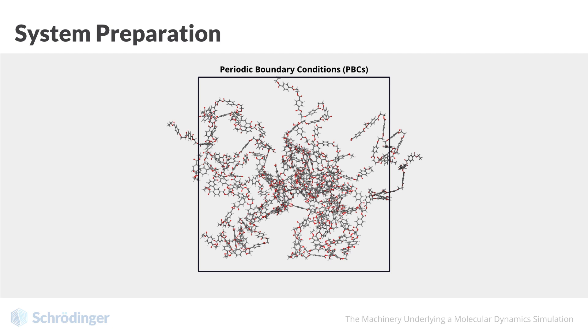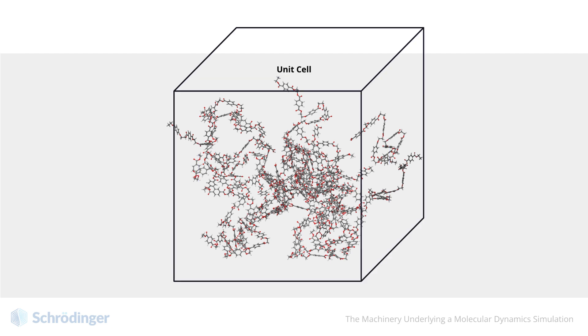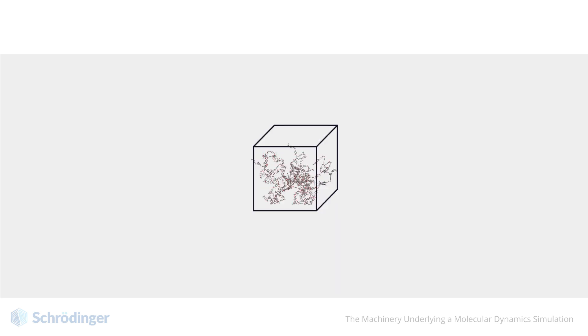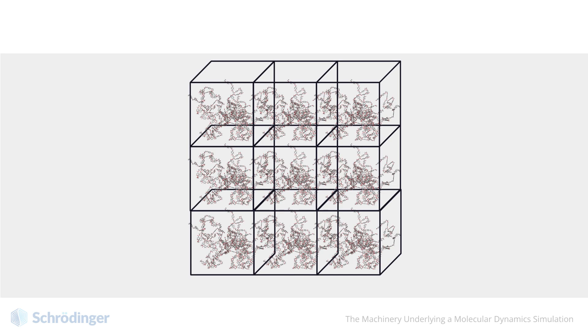Essentially, we construct a unit cell. The unit cell is three-dimensional and represents the repeat unit of an infinitely repeating system. But we only need to perform the simulation on this unit cell.